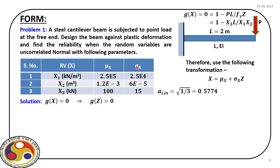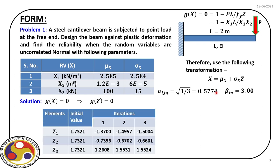Since we have three random variables, we have three different directions. We initiate the direction cosines with equal weightage in all three directions, so our starting value is 0.5774. We also assume beta initial to be 3. This initial guess should be at a favorable location so that we get faster convergence. With alpha initial and beta initial, we find z initial, and because of equal weightage, all initial z values are 1.7321. With these initial values, we start our iteration.